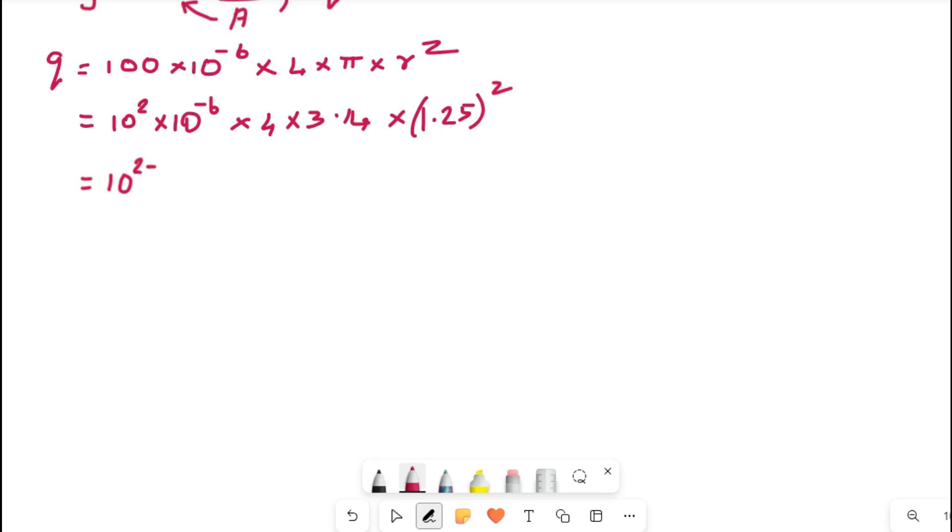So use the exponents rule, 10 raised to 2 minus 6 will come, into 4 into 3.14 will be 12.56, and 1.25 do the squaring, then you will get 1.5625.